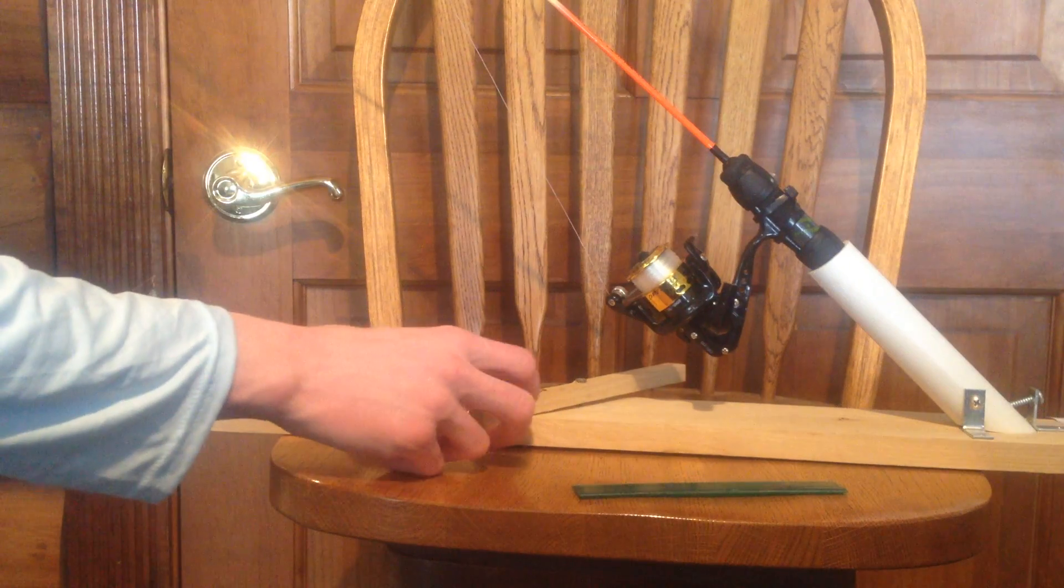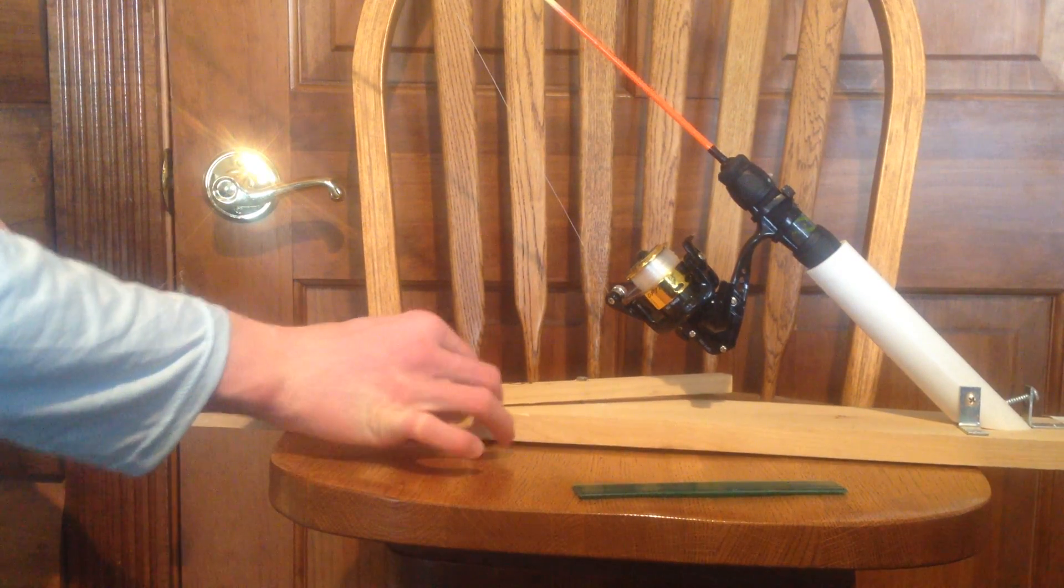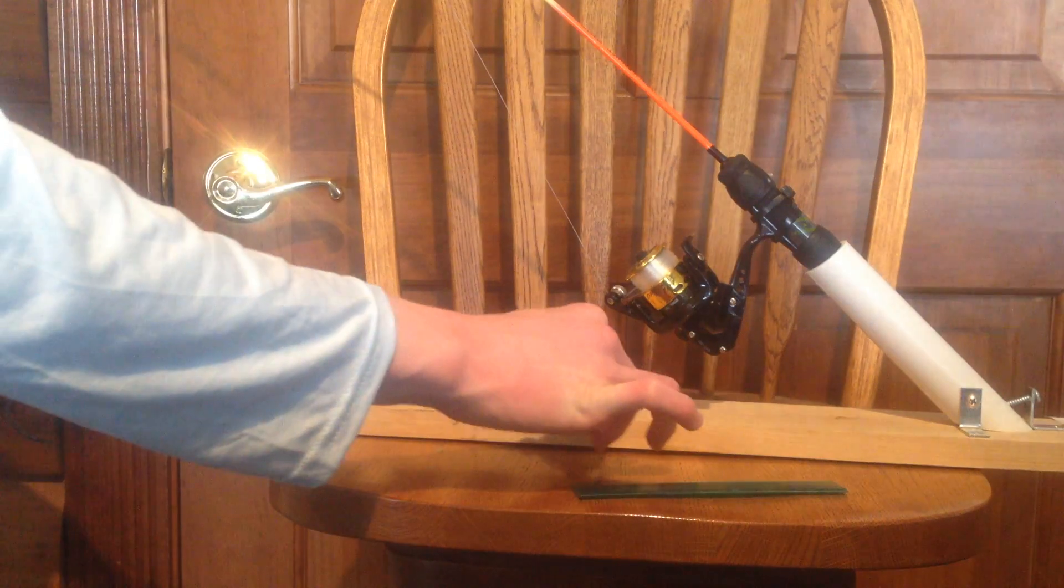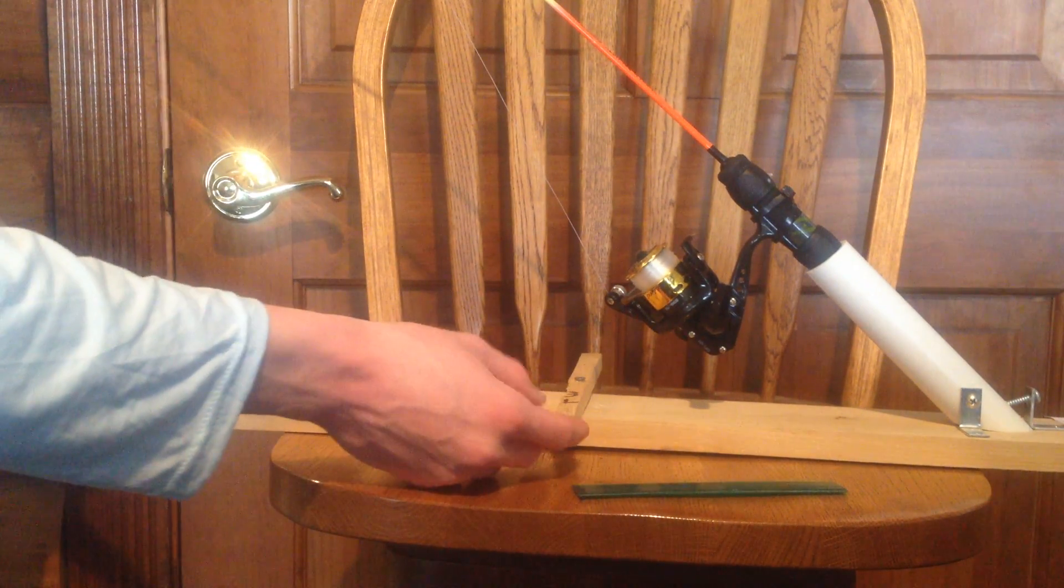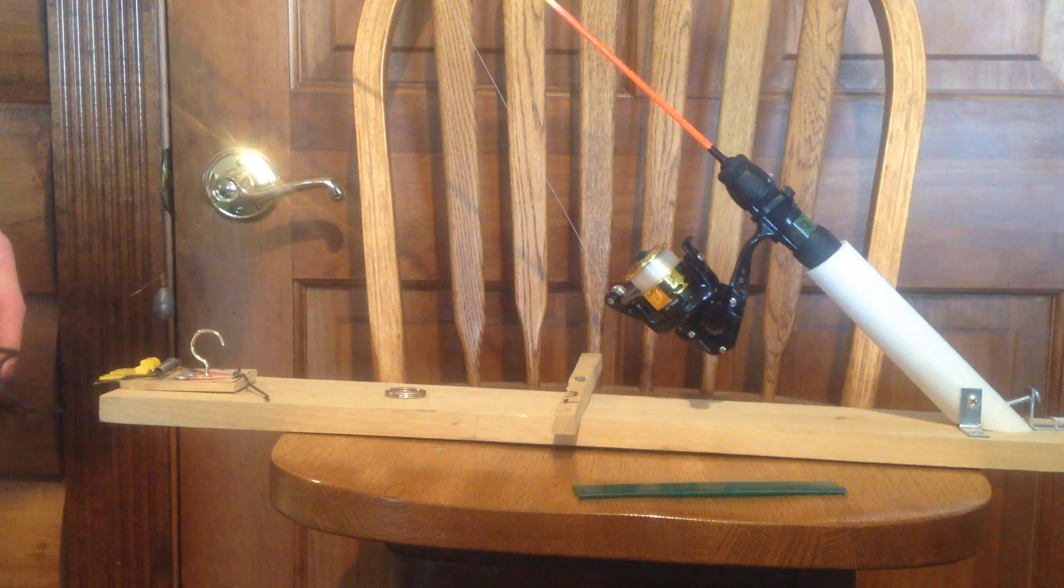And then you also need a little wooden thing that you can tuck in just with a screw and then you can fold back out. That way your automatic fisherman won't go down the hole. Alright, let's get to it.